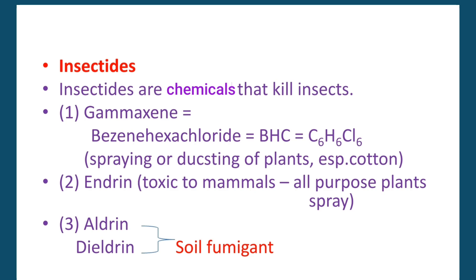An example of a pesticide is Gamazine, the chemical name of benzene hexachloride (BHC). Its formula is C6H6Cl6. Gamazine is used by spraying or dusting plants, especially cotton.